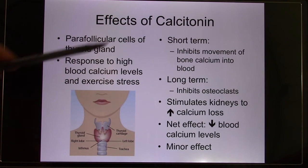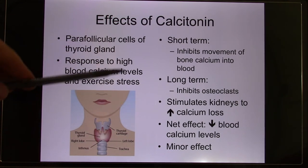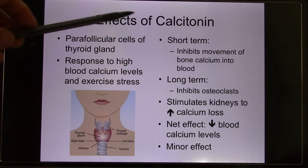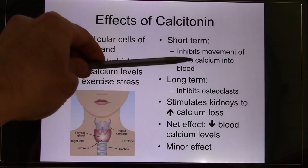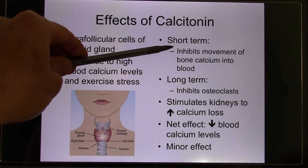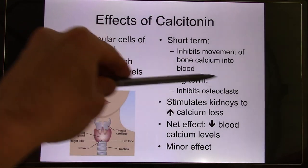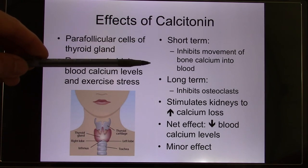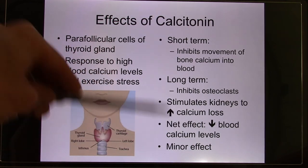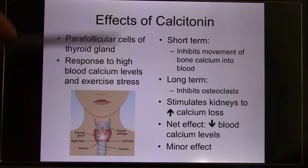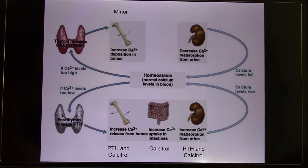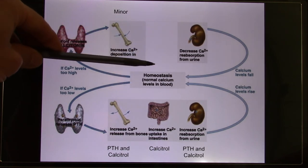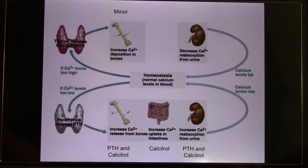That's calcitonin versus parathyroid hormone. When blood calcium level increases, calcitonin is activated. Its short-term function is to inhibit movement of bone calcium into the blood, decreasing blood calcium quickly. Long-term, it inhibits osteoclasts, reducing bone matrix breakdown. Together, calcitonin functions to decrease blood calcium. This is homeostasis: if blood calcium is too high you can decrease it, and if it's too low you can increase it — maintaining a stable environment.